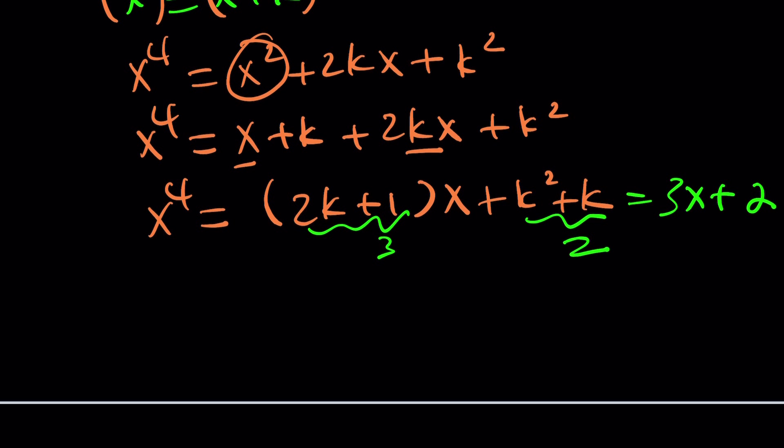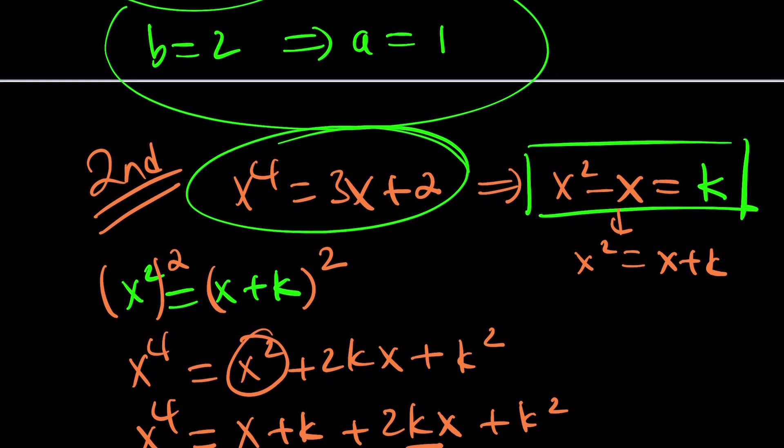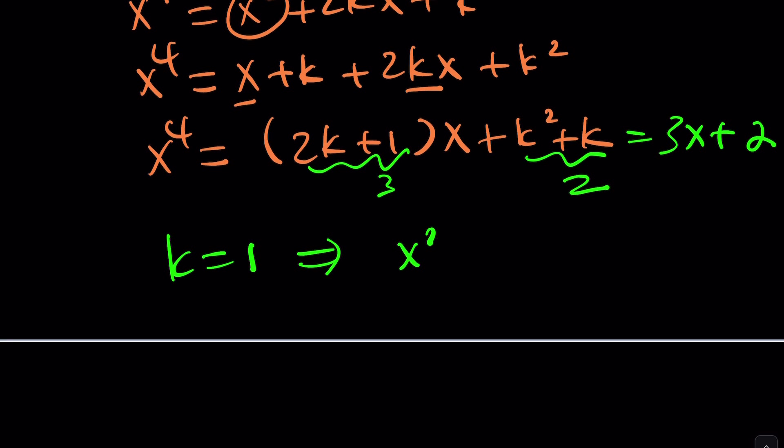Yes. If k is equal to 1, then we're good. But, what is k? k is what you're looking for. Did you forget? Come on. x squared minus x is equal to k, so x squared minus x is equal to 1, and this is what you're looking for.